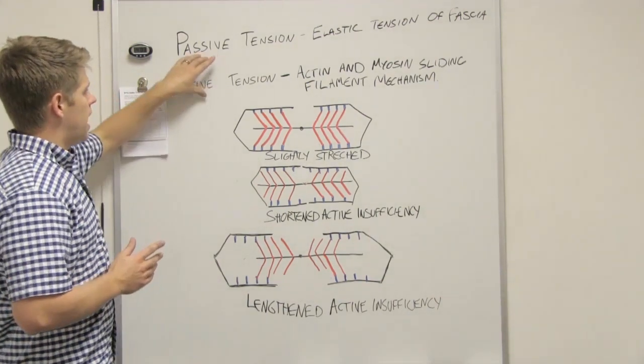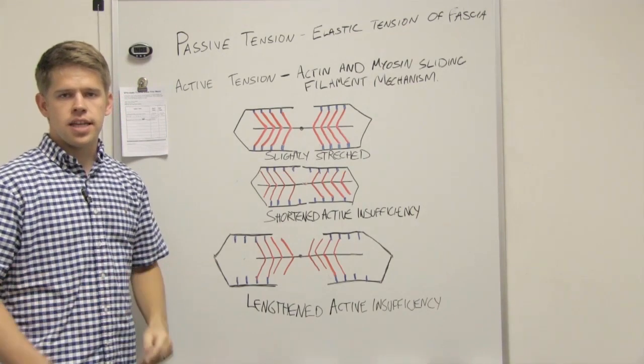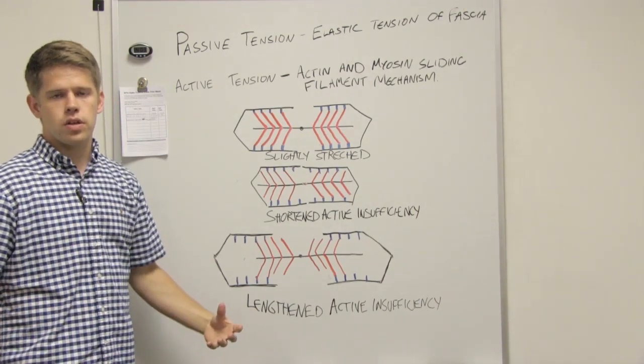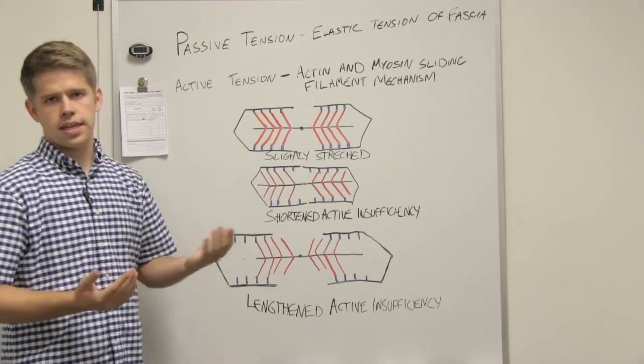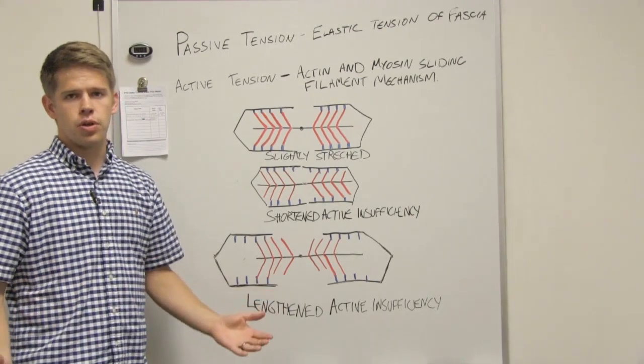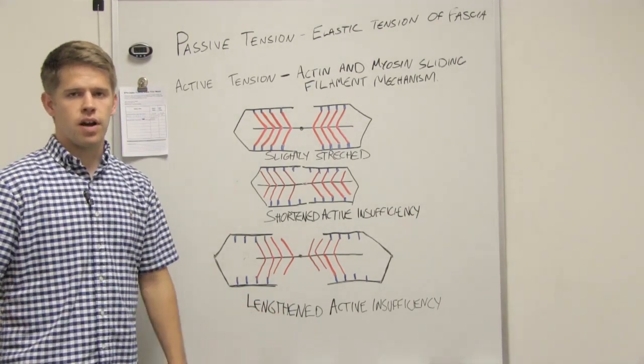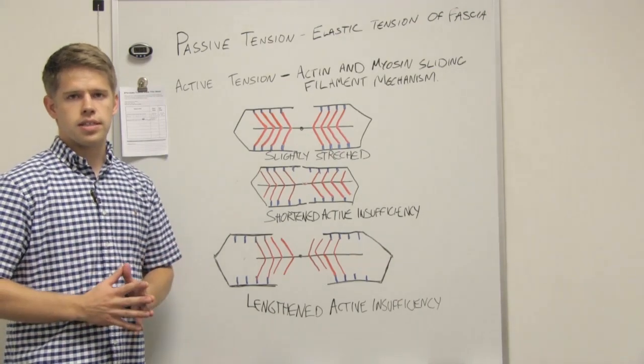So before we talk about passive tension and active tension, let's define what tension is. Tension is a pulling force. So anytime you're pulling on something, you are generating a force, and that is called tension. And we know that muscles don't push. The only type of force they provide is pulling. So the only force that they do is tension.